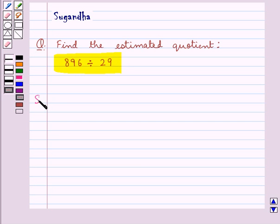Let's see the solution now. So when we divide 896 by 29, we have to find the estimated quotient. And for this,